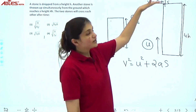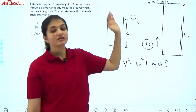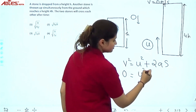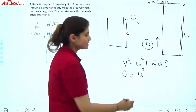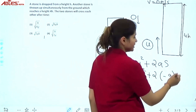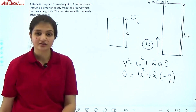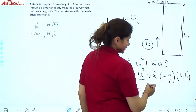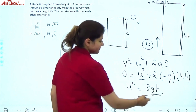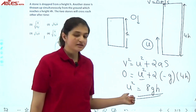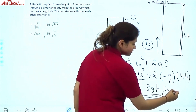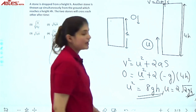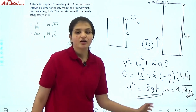When the stone is thrown upward, its speed decreases and becomes 0 at maximum height. So: 0 = u² + 2 × (−g) × 4h. This gives u² = 8gh. Therefore, the initial speed u = √(8gh).